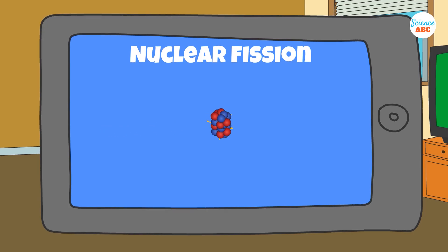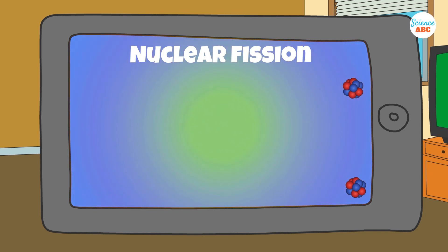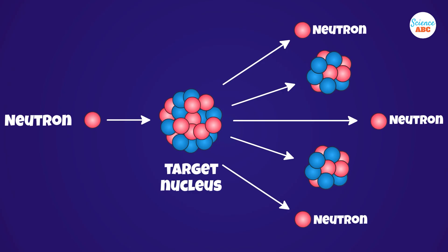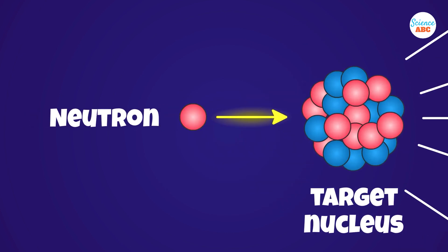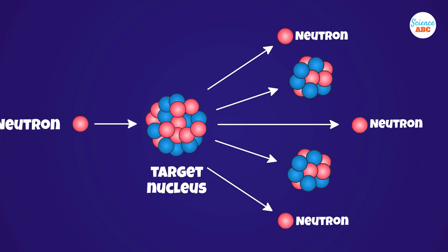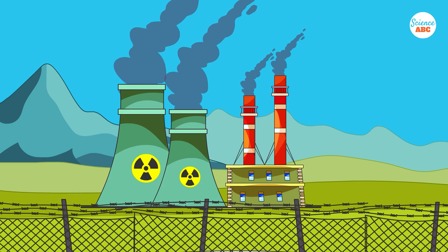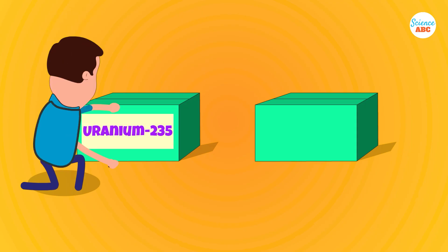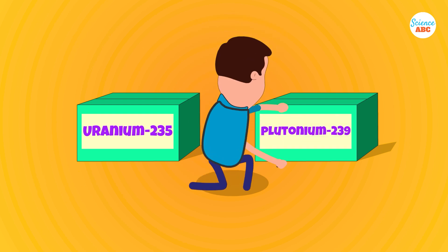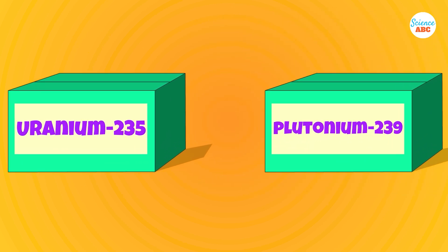Nuclear fission is a process in which a heavy nucleus of an atom is split into smaller, lighter, and more stable nuclei by a neutron that collides with the parent atom at a high speed. The smaller atoms produced through this process are called fission products. In nuclear power reactors, uranium-235 and plutonium-239 are the most commonly used elements for fission reactions.